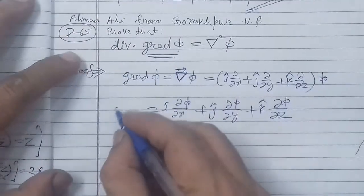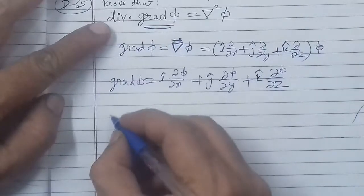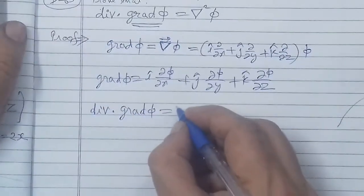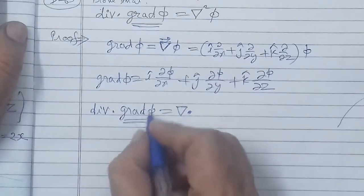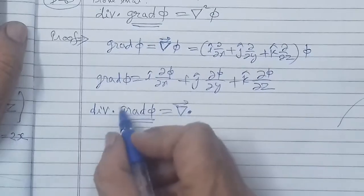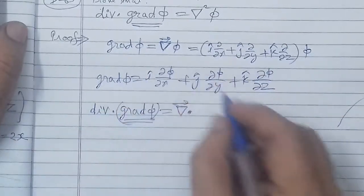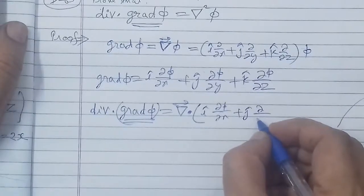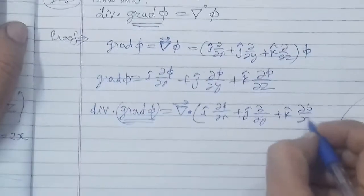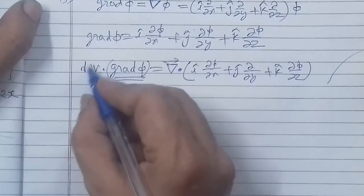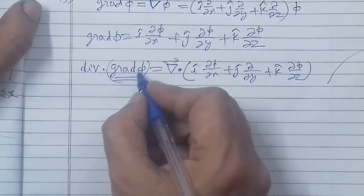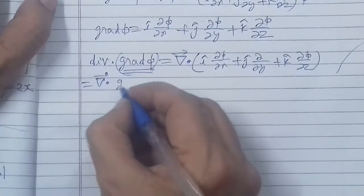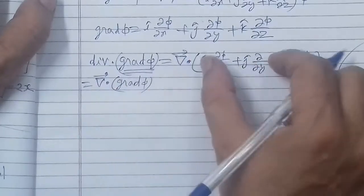Now we can find the left hand side value. Divergence of gradient phi. So divergence, its value is del, then whatever vector is written after this, with that it does dot product. And this gradient phi is a vector whose value we have found above: i del phi over del x plus j cap del phi over del y plus k cap del phi over del z. Now here, first there will be definition of del of this gradient. Or after one step, we have to write down del dot gradient phi, and gradient phi is a vector. After that writing this step is better, that is del dot gradient's value which we had calculated earlier.